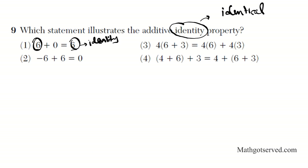When you add 0 to any number, you end up with what you started with. So this is the additive identity property. The keyword here is identical. So option number 1 is going to be the correct answer because 0 is the additive identity.